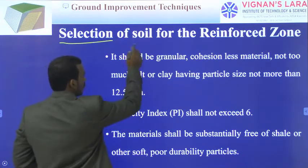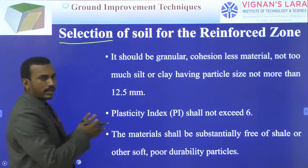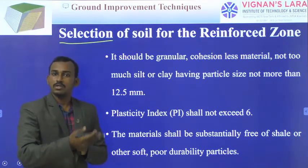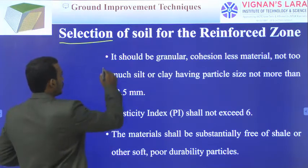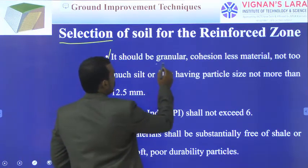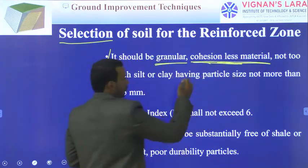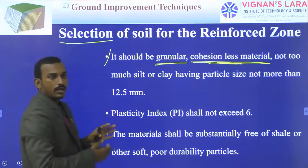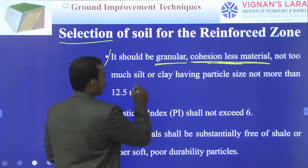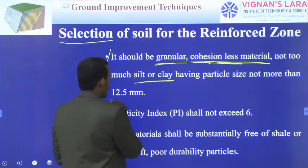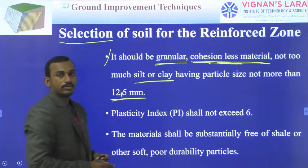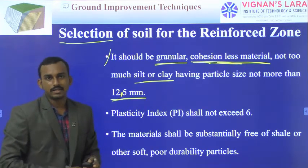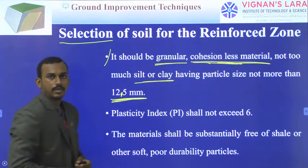Coming to the selection criteria for soil for reinforced earth — the soil must be granular and cohesionless, should not contain silt, and the particle size should not be greater than 125 mm. That is the first condition. The second condition is that the plasticity index should not be more than six. Plasticity index is the difference between the liquid limit and the plastic limit.